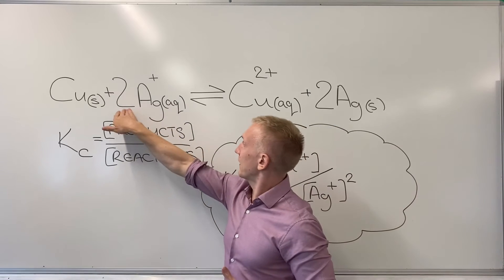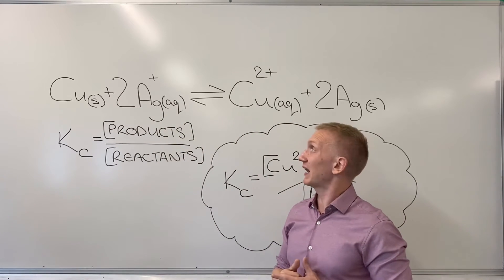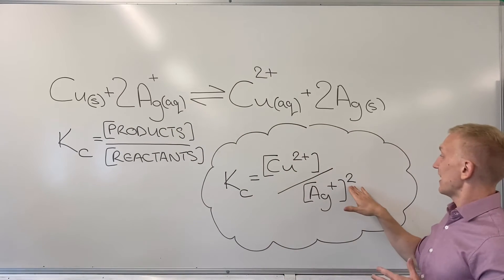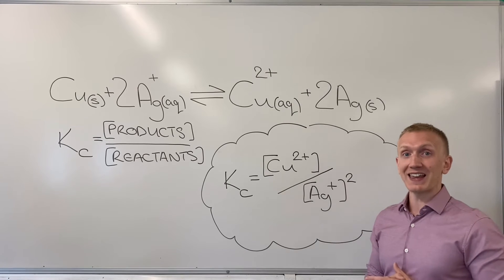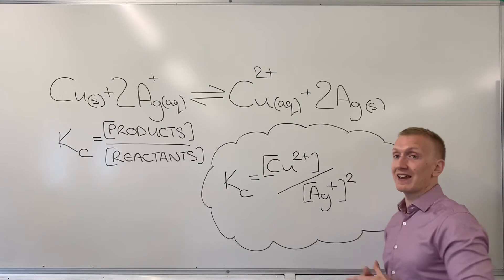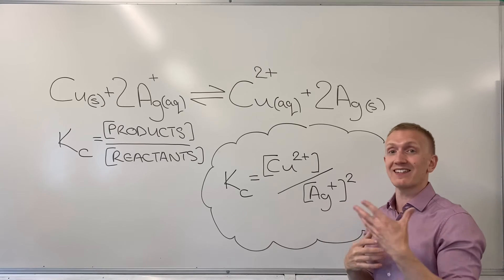You'll also notice that the two that's in front of the silver ions on the left here on my reactant side is now the power of on the denominator of the KC expression. So that still takes place. That's your normal KC assembly technique.